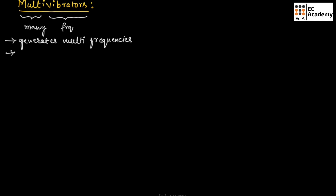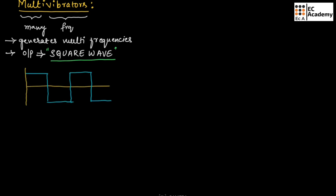The output of multivibrators will generally be a square wave. Before understanding the types of multivibrators, let us understand a square wave. A square wave has a high state as well as a low state.